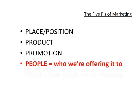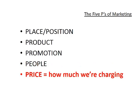Our fifth P is price — how much we're charging — a major factor in getting people to come in. So we have the five P's: place, product, promotion, people, and price. You will sometimes see this referred to in different order; they're somewhat interchangeable. I like this sequence because I think it builds logically, and this is the sequence we're going to follow in this course.